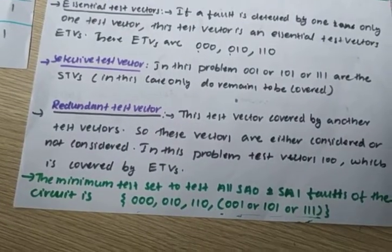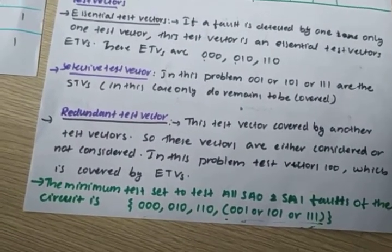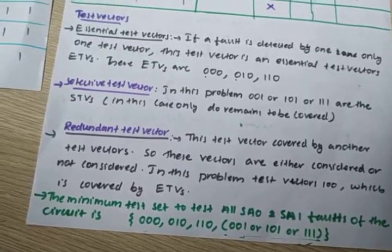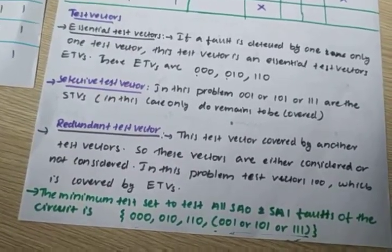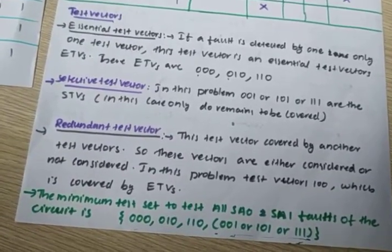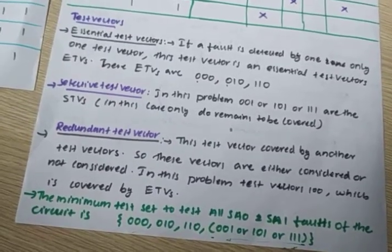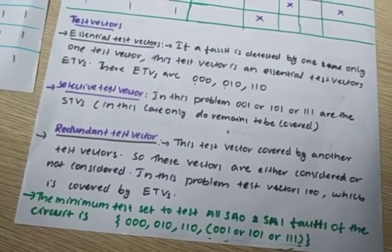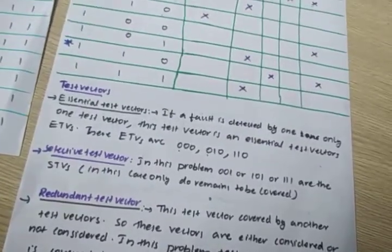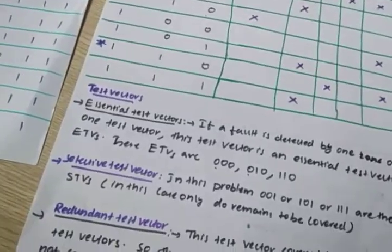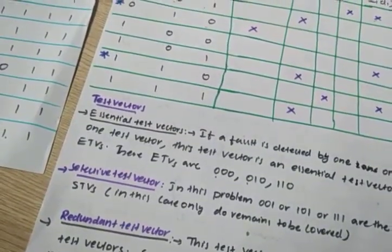So these are the minimum test vectors used to find out fault detection. While solving a problem, you have to complete the entire step: first draw the circuit, then find the fault table, then the fault cover table, then find the minimum test set. That's about the fault table method.